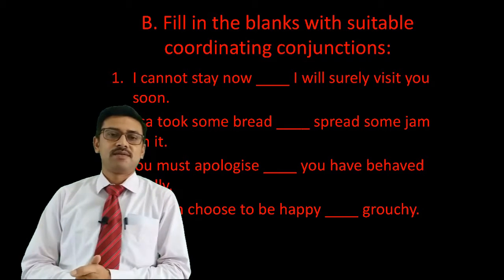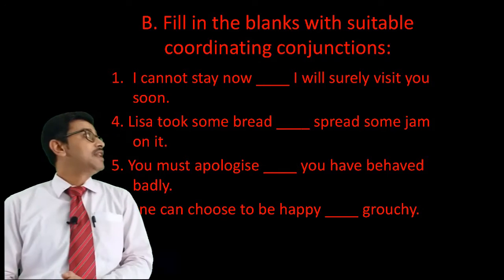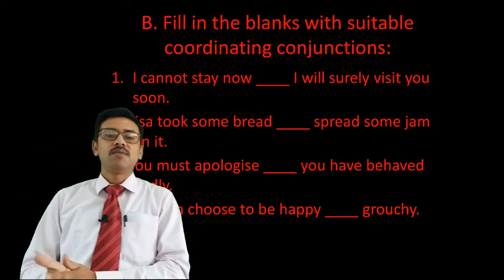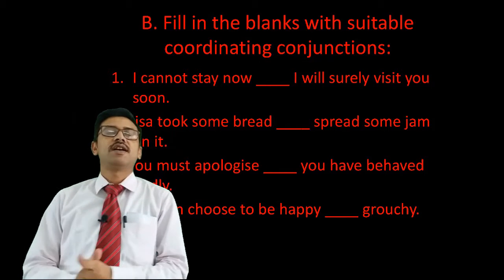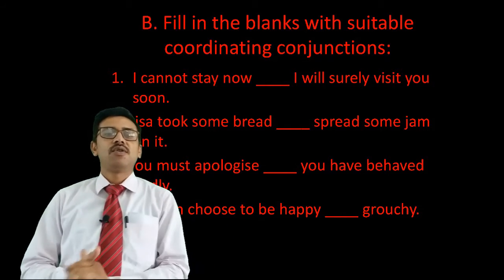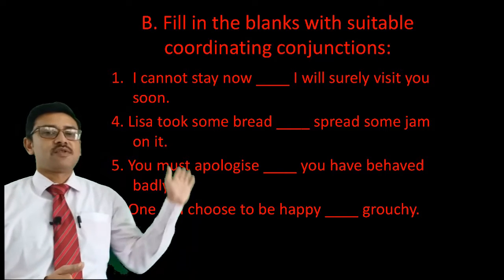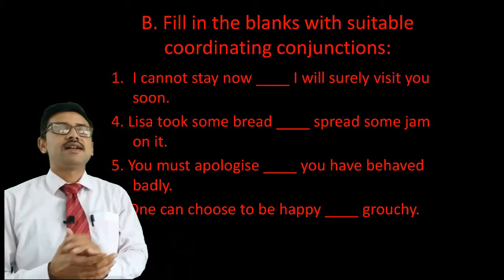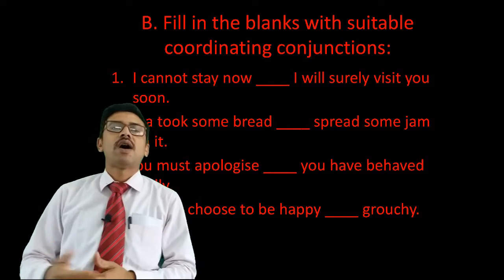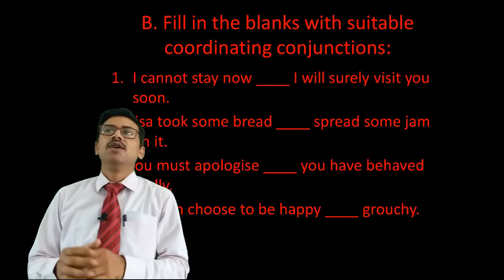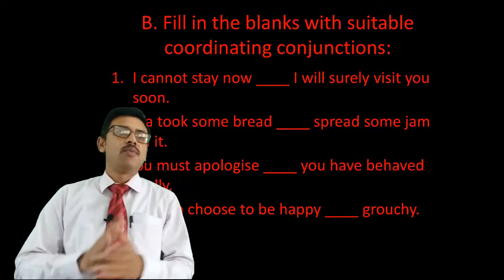In exercise A you just write FANBOYS. Exercise B says fill in the blanks with suitable coordinating conjunctions. I have picked four sentences from the ten sentences in your book to show you how to do it. While doing this, refer to your book as well.